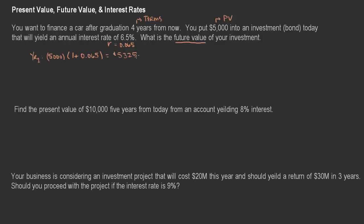Now, what happens with that $325? Because this investment is set up as compounding, it gets reinvested. That's what compounding interest means — the interest you earn throughout the term of the investment is put back into the investment itself and reinvested.